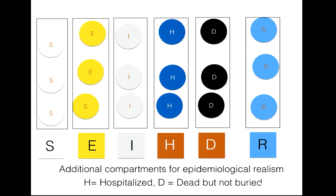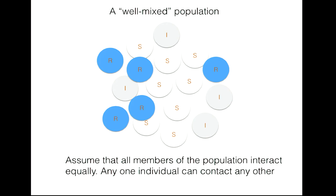We will consider what is called the well-mixed assumption: an infectious individual has an equal probability of contacting any other individual in the population. This is analogous to a well-mixed chemical reaction where any component can interact with any other. This is an important simplifying assumption—sometimes called the mean-field assumption in physics—that must be improved upon later, but it provides a useful first-level description. All members of the population interact equally and any one individual can contact any other.